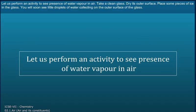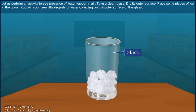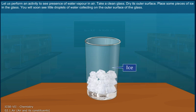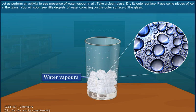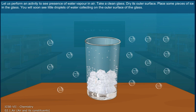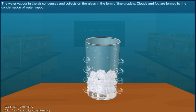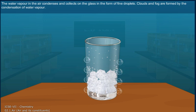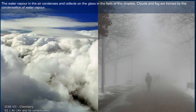Let us perform an activity to see the presence of water vapor in air. Take a clean glass and dry its outer surface. Place some pieces of ice in the glass. You will soon see little droplets of water collecting on the outer surface of the glass. The water vapor in the air condenses and collects on the glass in the form of fine droplets.